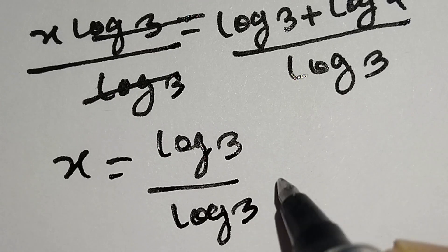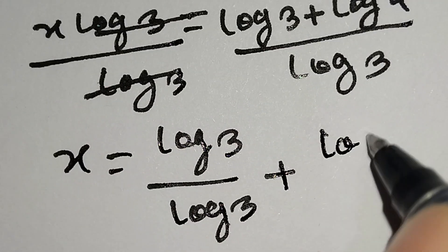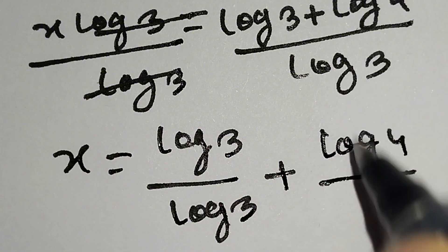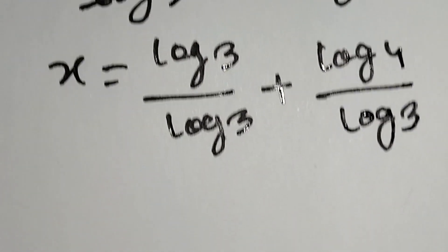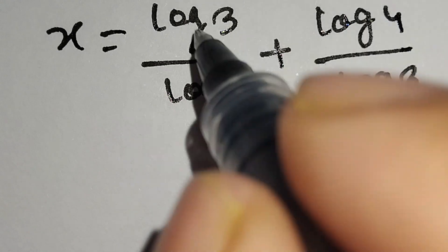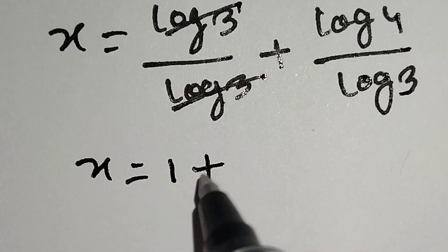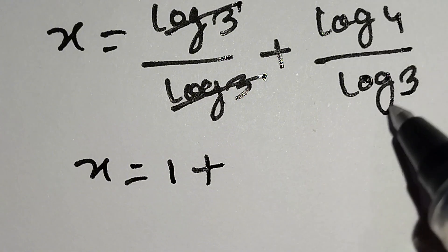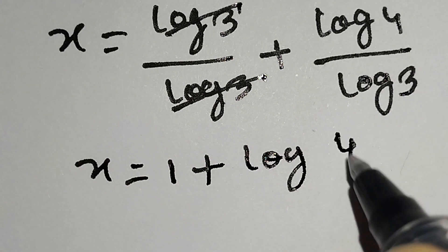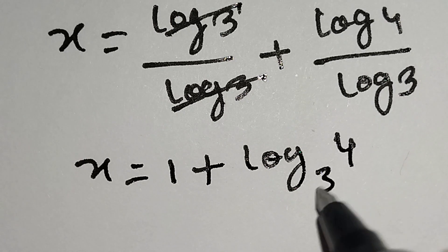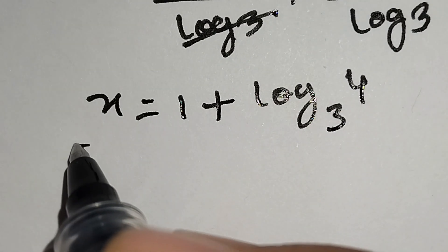This log 4 over log 3 is equal to log base 3 of 4. So the value of x is equal to 1 plus log base 3 of 4.